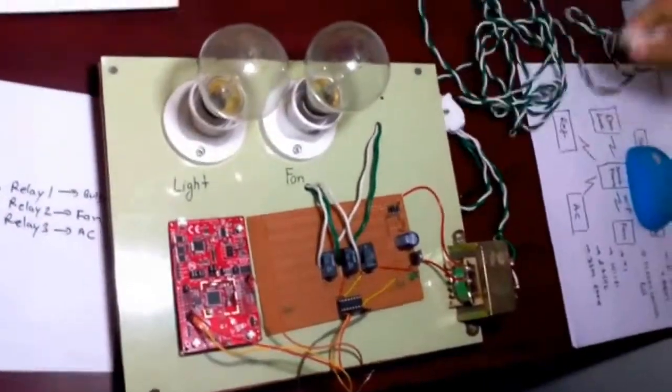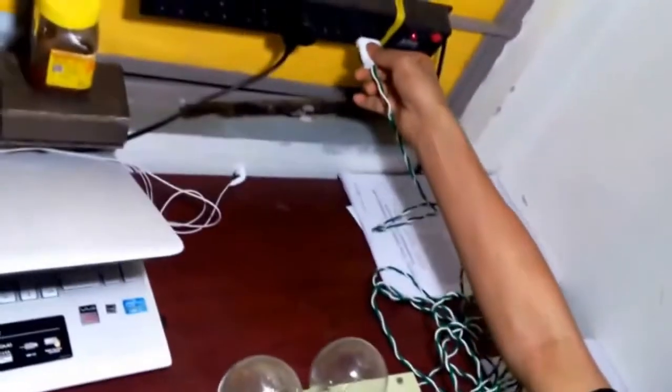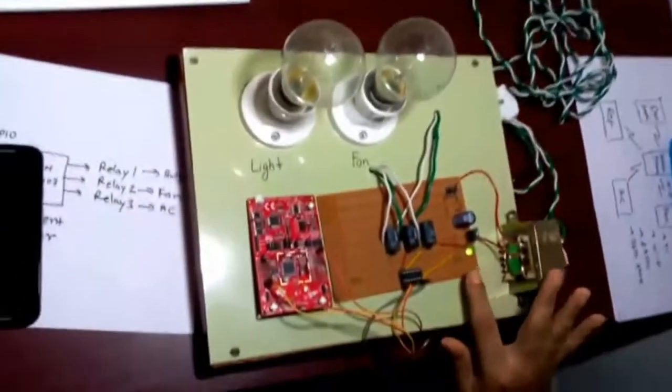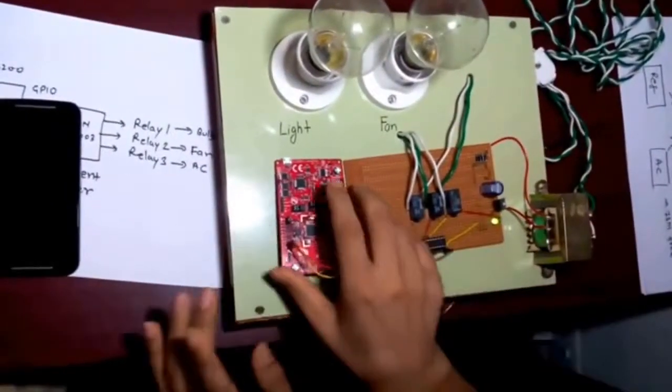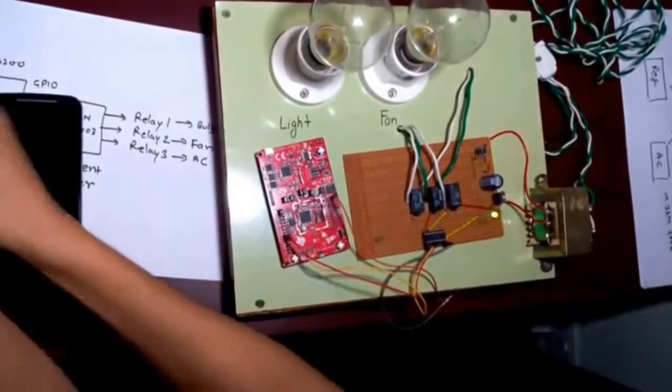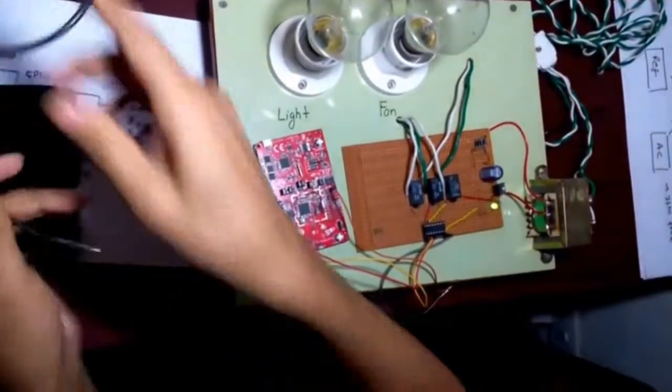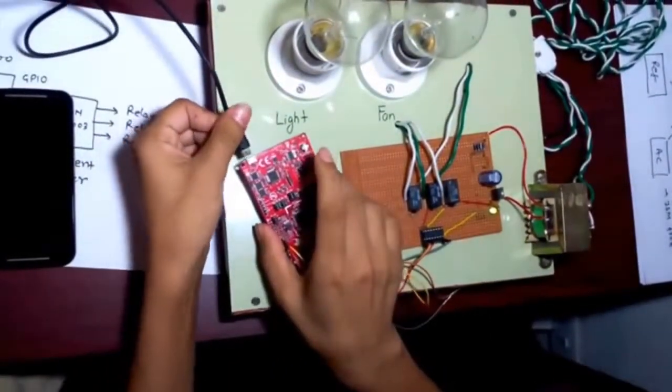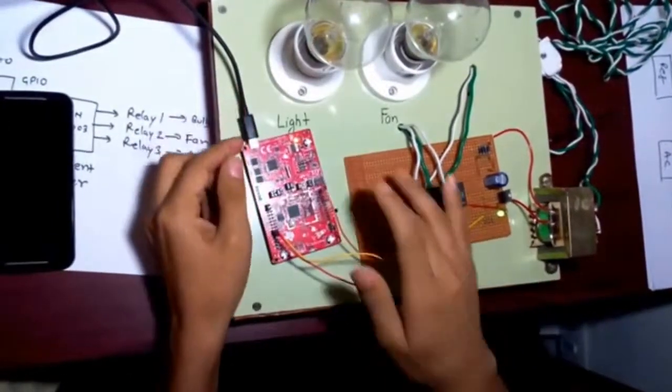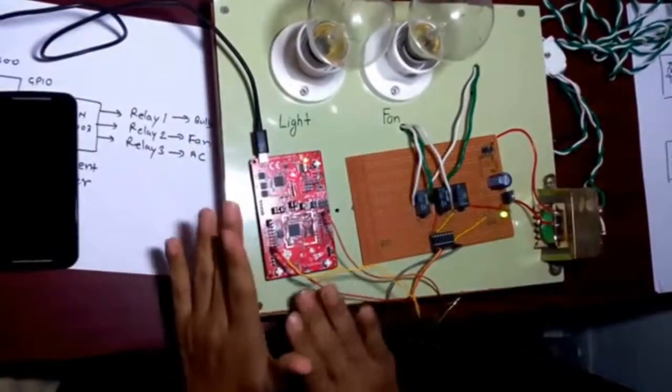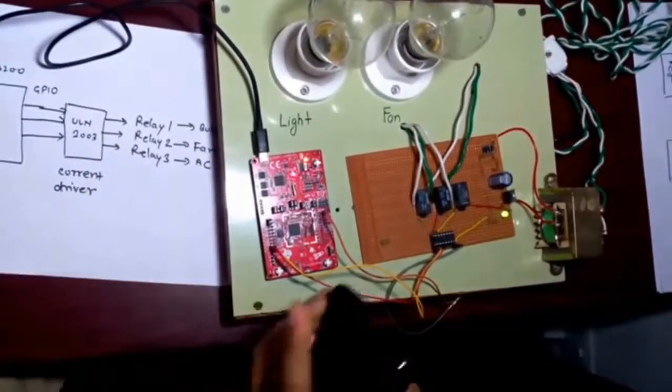Let's power on. So now you can see here the power is on. It is running on 230 volts. And now let's connect the power to this board also. This board is running on 5 volts. Now you can see here the power is on to this board.